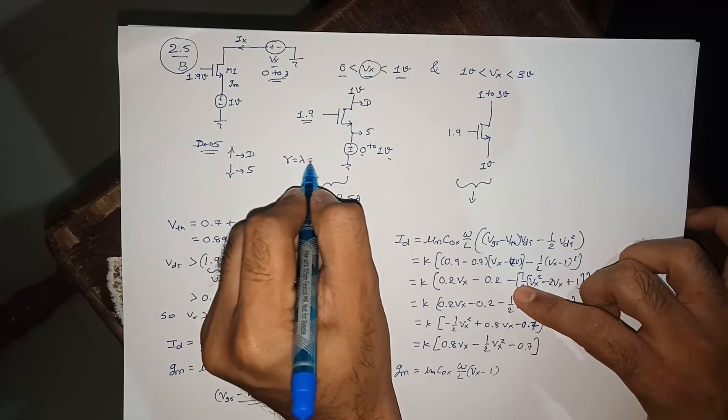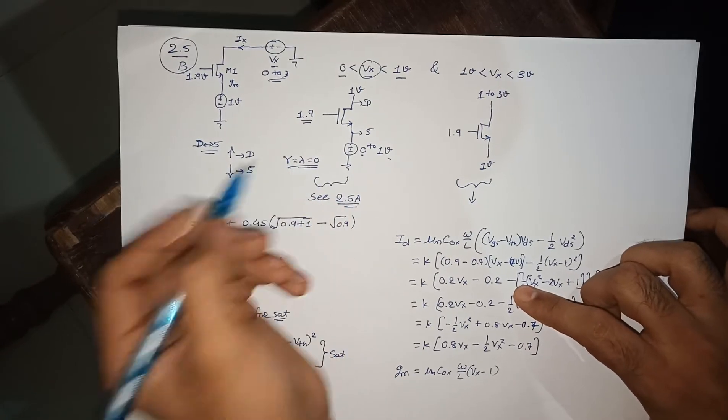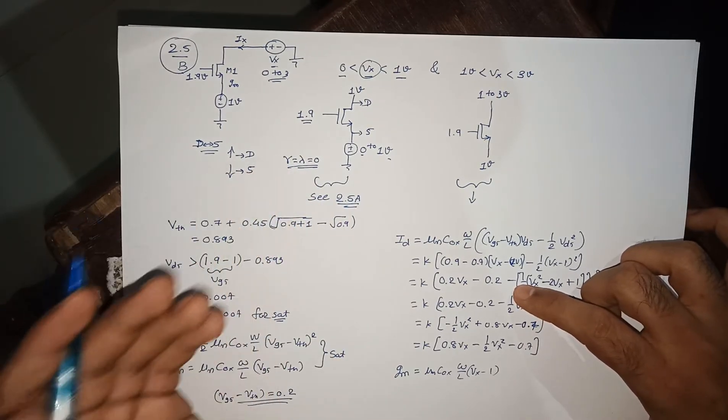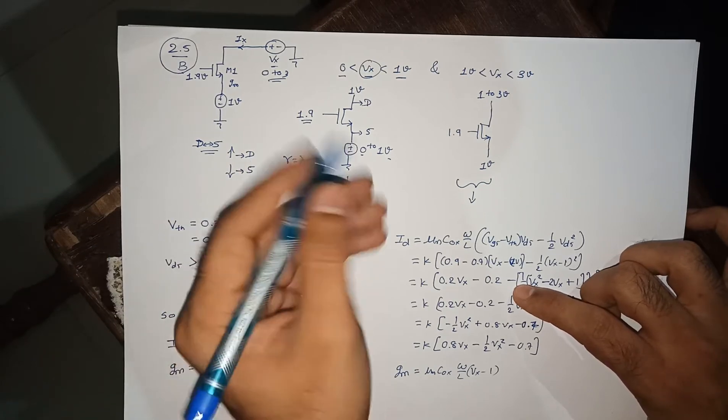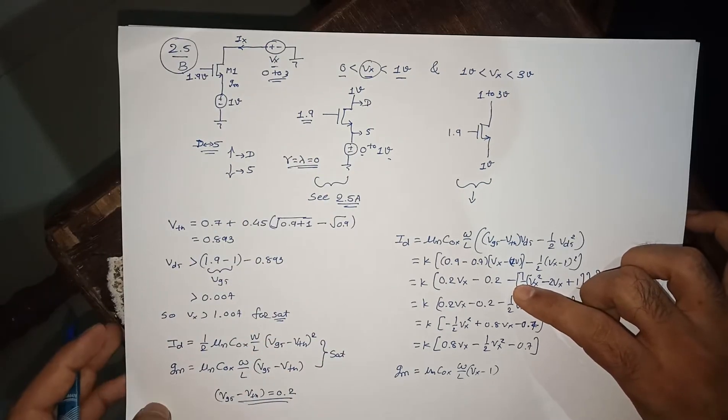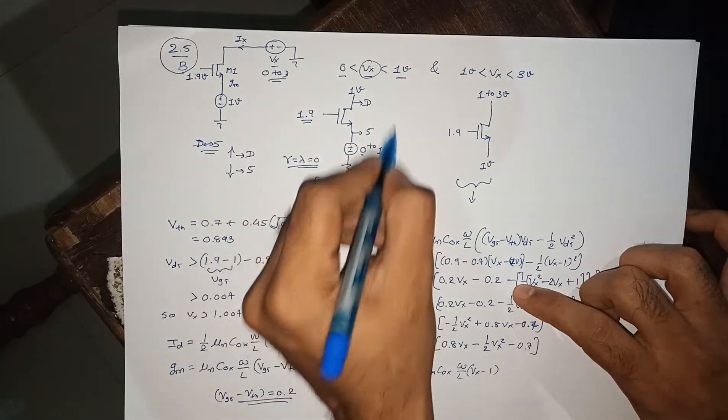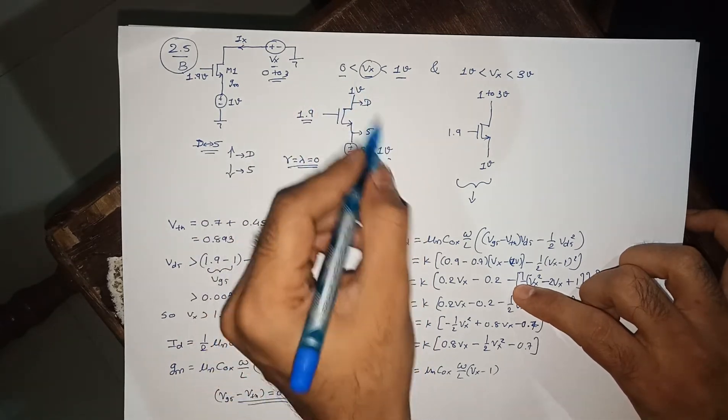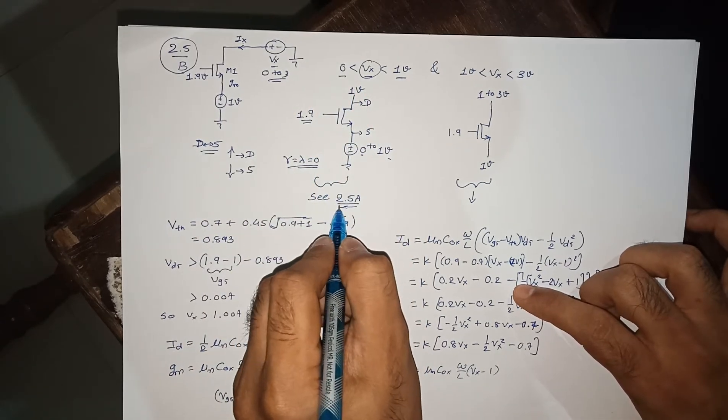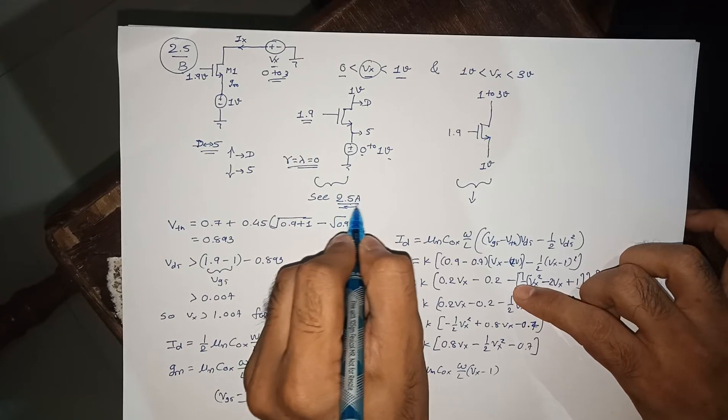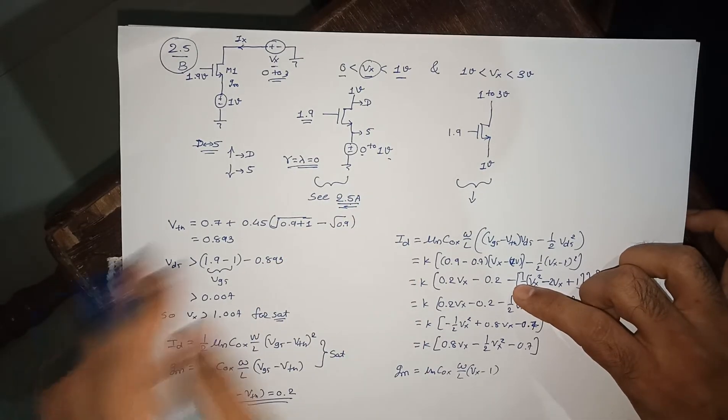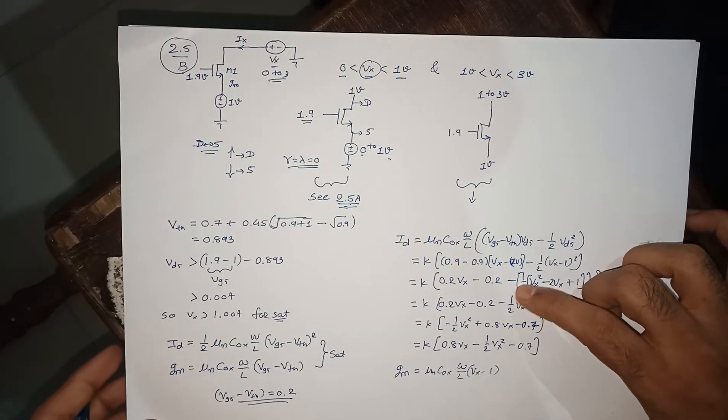That means gamma and lambda is equal to 0 for simplicity. If you don't want to use that, it's also possible to do that. For this one, we already discussed this kind of circuit in the previous video, that is 2.5 part A. You can see the solution for this kind of circuitry.